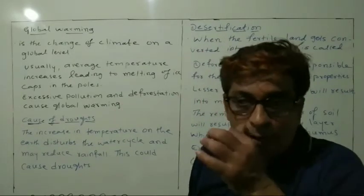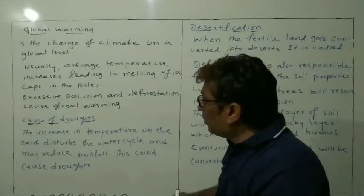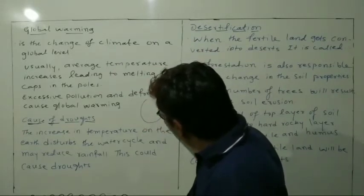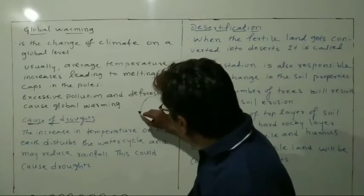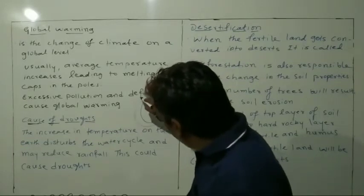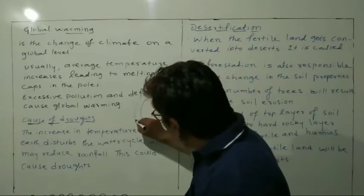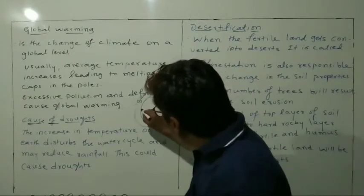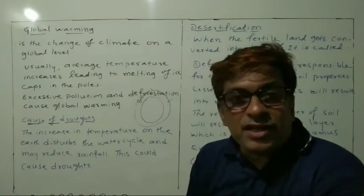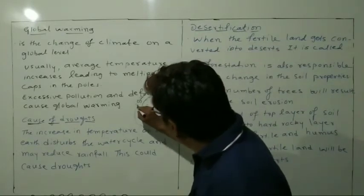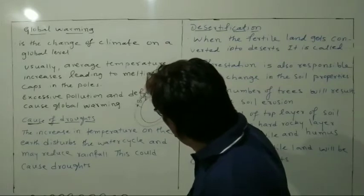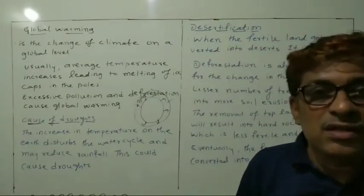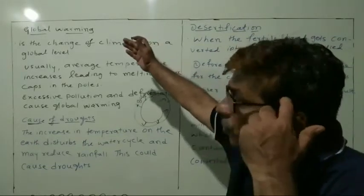Regarding global warming — the Earth is surrounded by atmospheric gases. Greenhouse gases will be there surrounding the Earth. Due to that, the Earth's radiation cannot escape, so the Earth's temperature keeps increasing. This is what we see as global warming.